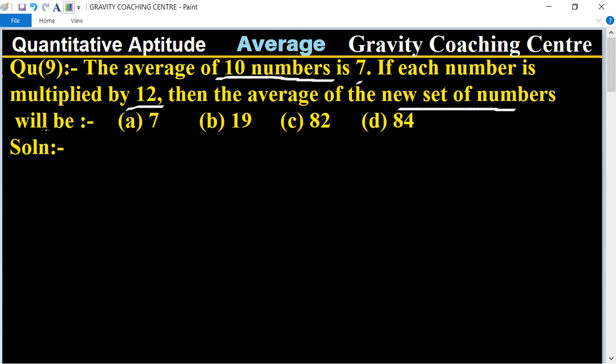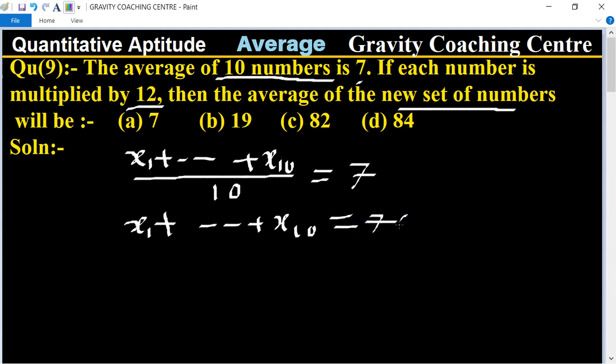In this question, given the average of 10 numbers is equal to 7, means x₁ + x₂ + ... + x₁₀ equals 70.